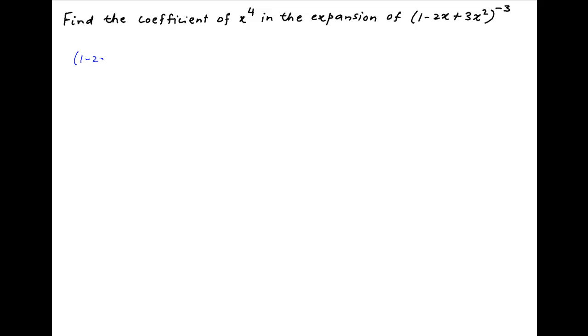The given expression 1 minus 2x plus 3x square, whole raised to the power minus 3, can be written as 1 minus brackets 2x minus 3x square, whole raised to the power minus 3.